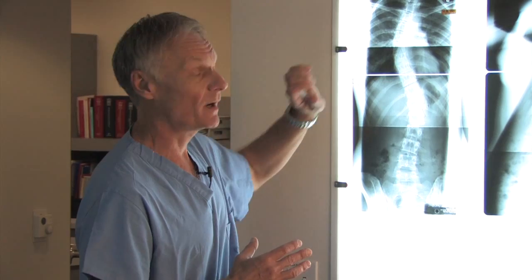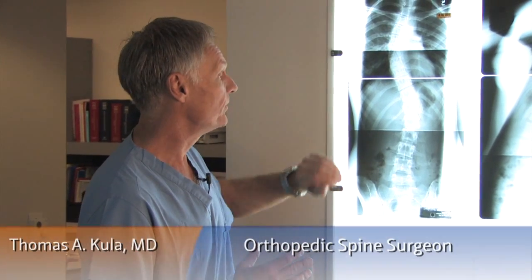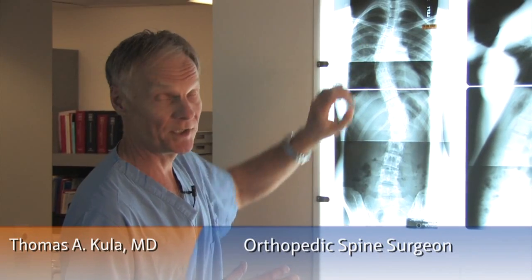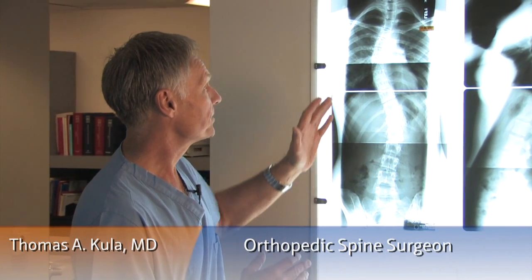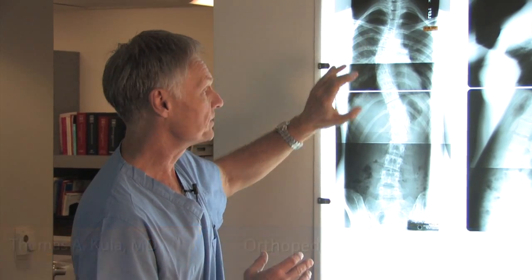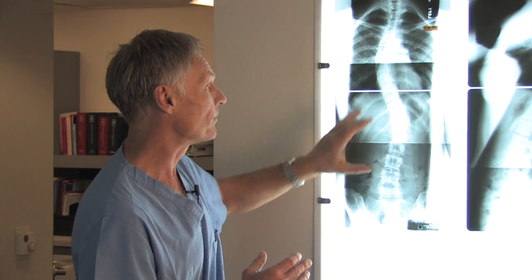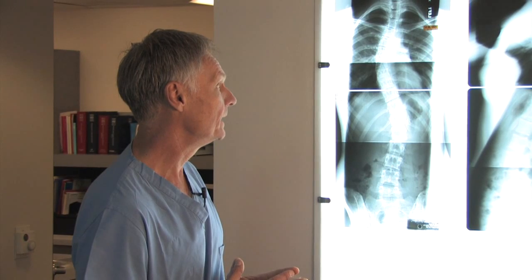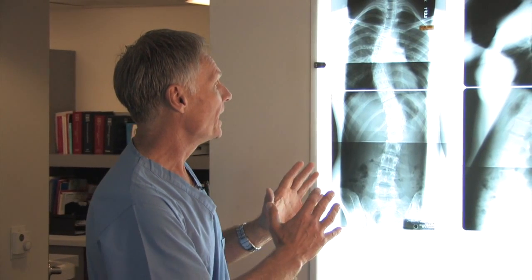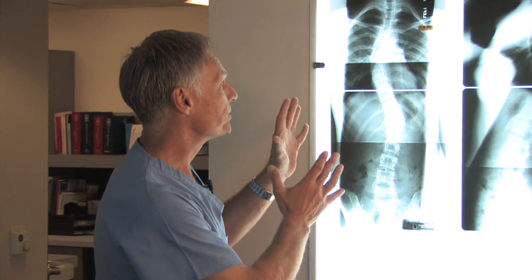Normally, if you look at the spine from the front view like this, all these vertebrae should line up and the spine should be straight. But you can see here that there's actually two curves — one in the middle part of the back, the thoracic spine, and one in the lower part of the back, the lumbar spine. Typically, any curvature that deviates more than 10 degrees is considered to be scoliosis.